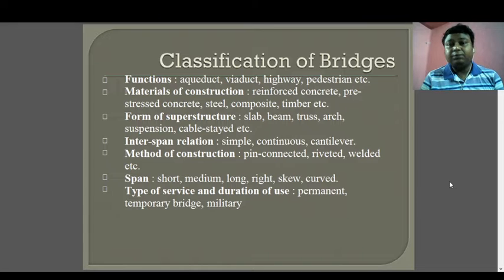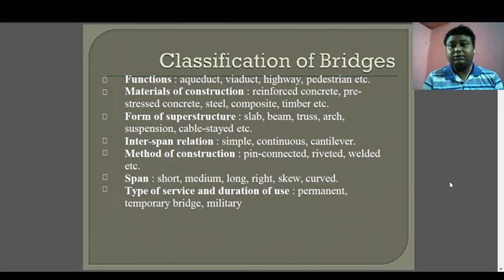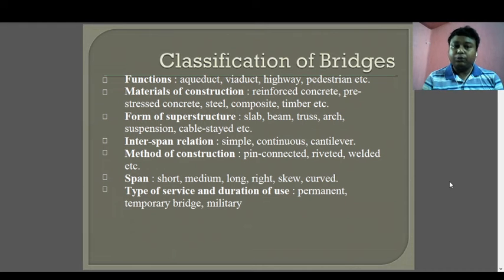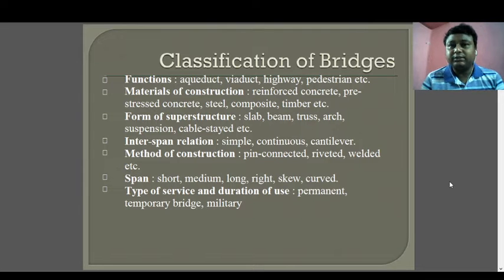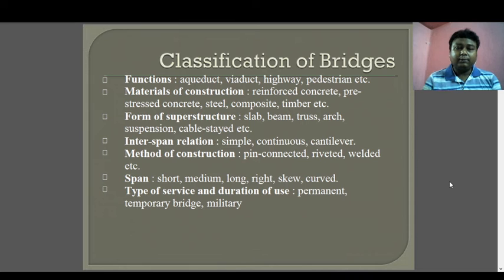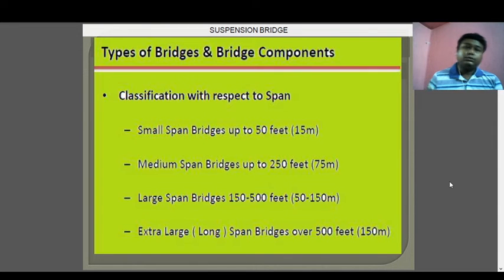In the form of superstructure, there are slab bridges, beam bridges, truss bridges, arch bridges, suspension bridges, and cable-stayed bridges. Based on interspan relation, a bridge is simple, continuous, or cantilever. Based on construction method: pin connected, riveted, welded, etc. Based on span: short span, mid span, long span, skewed, and curved. Regarding span, the basic difference between a bridge and a culvert: if the length of a span is more than six meters, it is called a bridge; if less than six meters, it is a culvert.